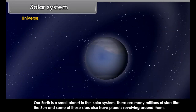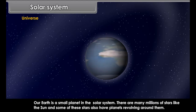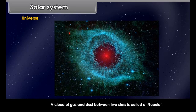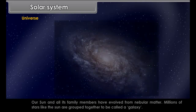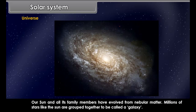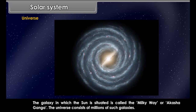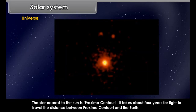Our Earth is a small planet in the solar system. There are many millions of stars like the sun, and some of these stars also have planets revolving around them. A cloud of gas and dust between two stars is called a nebula. Our sun and all its family members have evolved from nebular matter. Millions of stars like the sun are grouped together to be called a galaxy. The galaxy in which the sun is situated is called the Milky Way or Akash Ganga. The universe consists of millions of such galaxies. The star nearest to the sun is Proxima Centauri — it takes about four years for light to travel the distance between Proxima Centauri and the Earth.